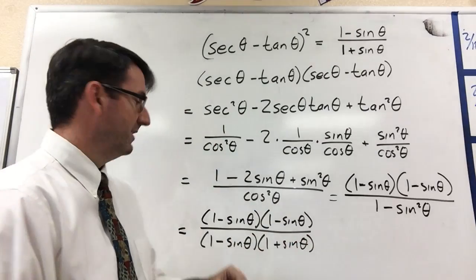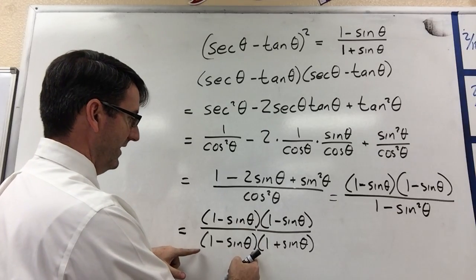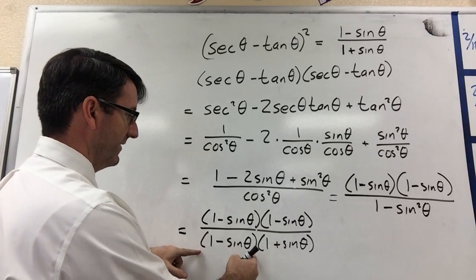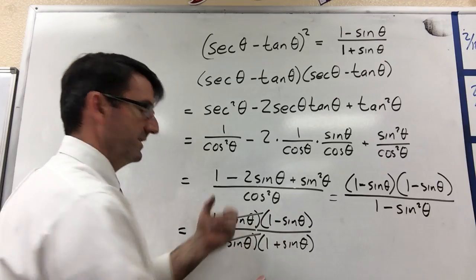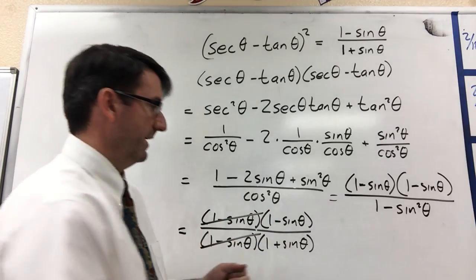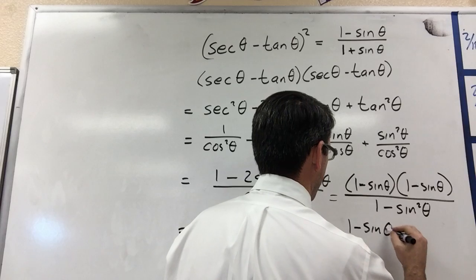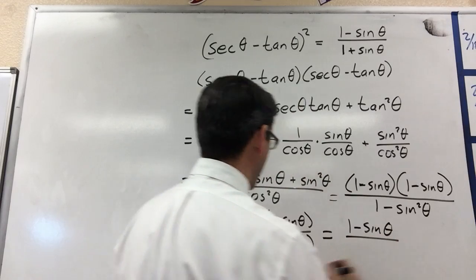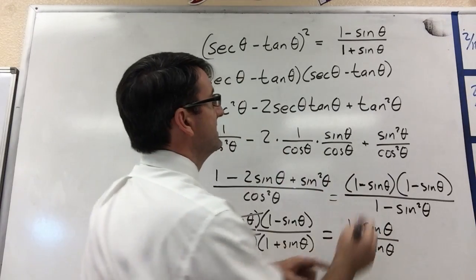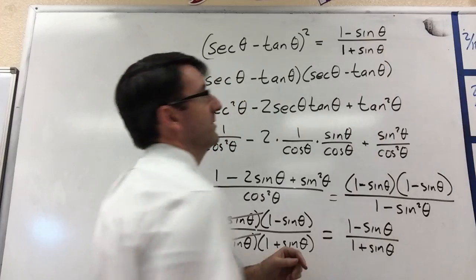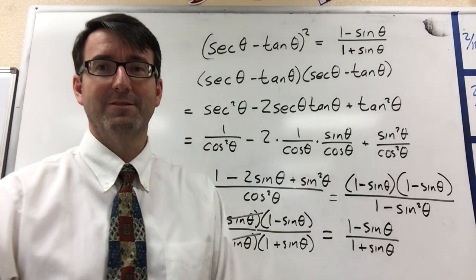Now notice that we've got a 1 minus sine theta in the numerator and a 1 minus sine theta in the denominator. Those divide to 1, and what we're left with is 1 minus sine theta divided by 1 plus sine theta, which is what we were trying to prove. Alright, so that's number five.